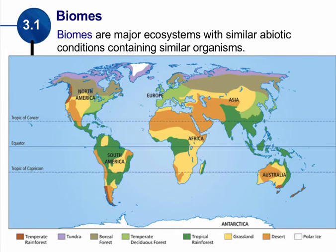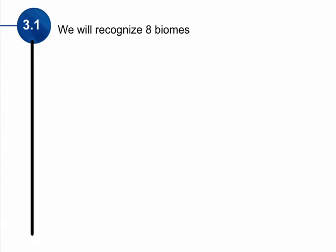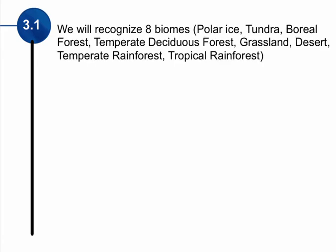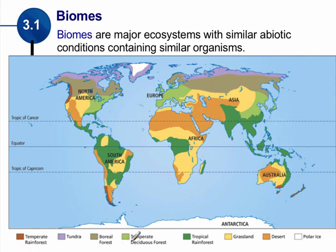When looking at biomes, we're going to recognize eight major biomes: polar ice, tundra, boreal forest, temperate deciduous forest, grassland, desert, temperate rainforest, and tropical rainforest. These are the eight major biomes that exist on earth. They are also listed at the bottom of the picture in your data booklet.